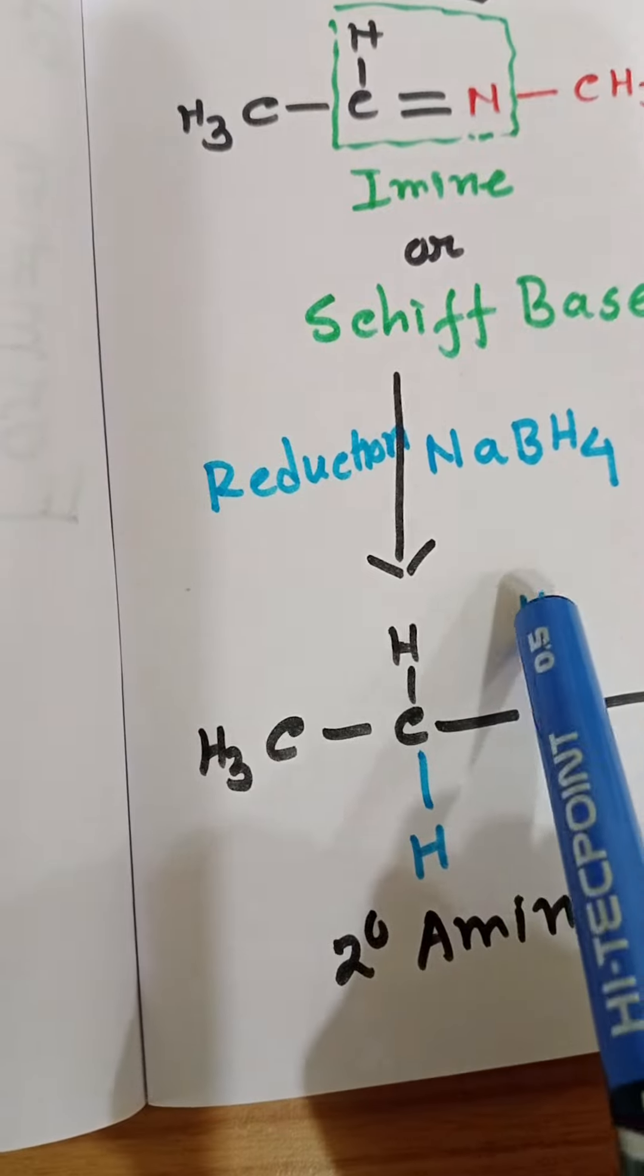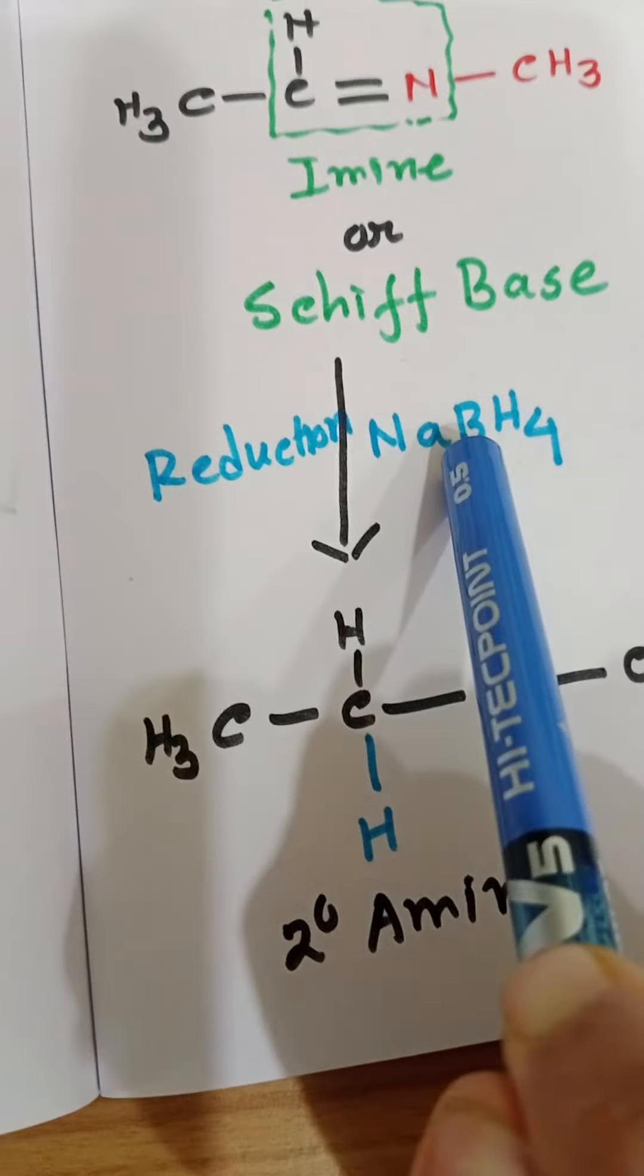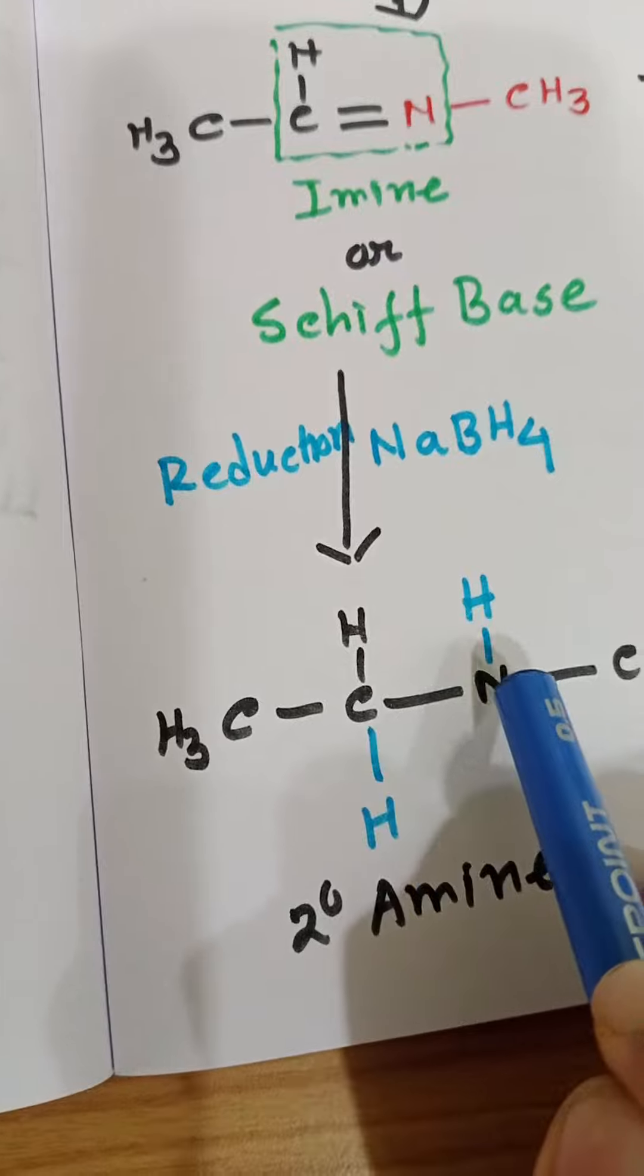Here you can see these two hydrogens, the blue color hydrogen, came from sodium borohydride and it added to the carbon and nitrogen.